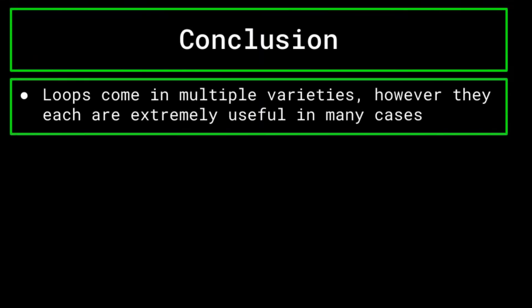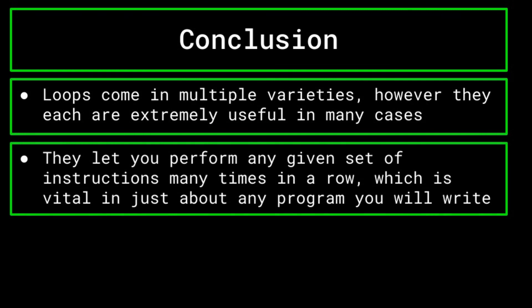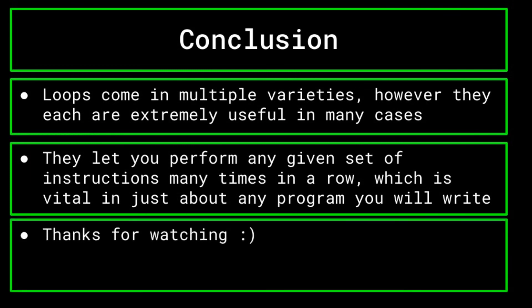As you can see, loops and the many different types they come in can be extremely useful in your code. They allow you to perform some instructions many times in a row, iterate through arrays and lists, and overall decrease the clutter in your code that would result from trying to perform repeated instructions without loops. That's all for today's episode. Next time we will be looking at errors and how you can fix the many different types that will pop up as you code. If you enjoyed, be sure to like the video and subscribe so you don't miss the content we have coming out soon. Thanks for watching.